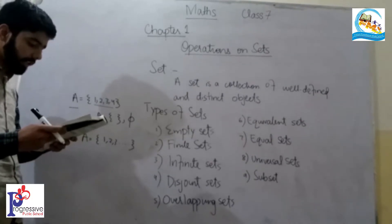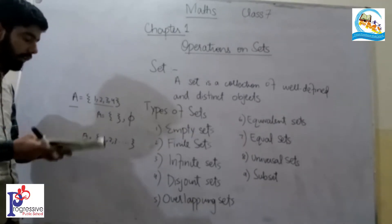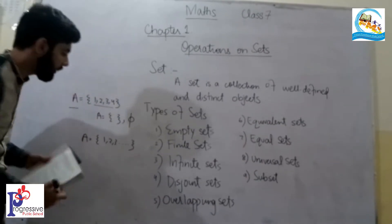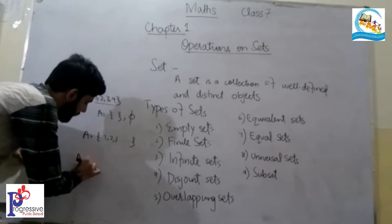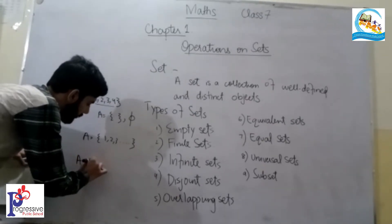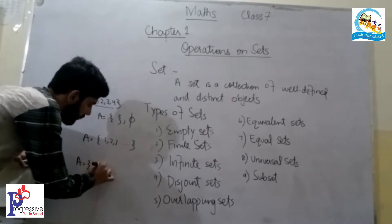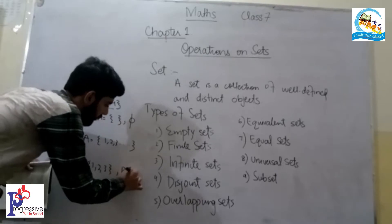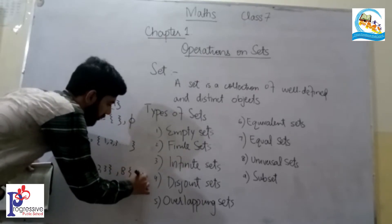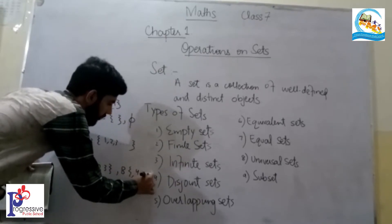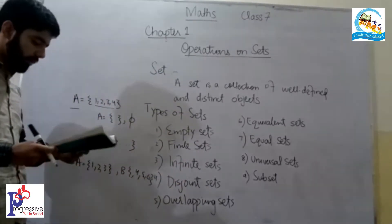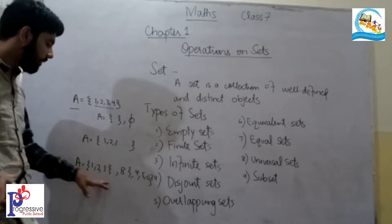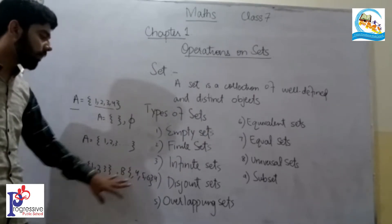Next is disjoint set. Two sets which do not have the same common values or common objects are called disjoint sets.